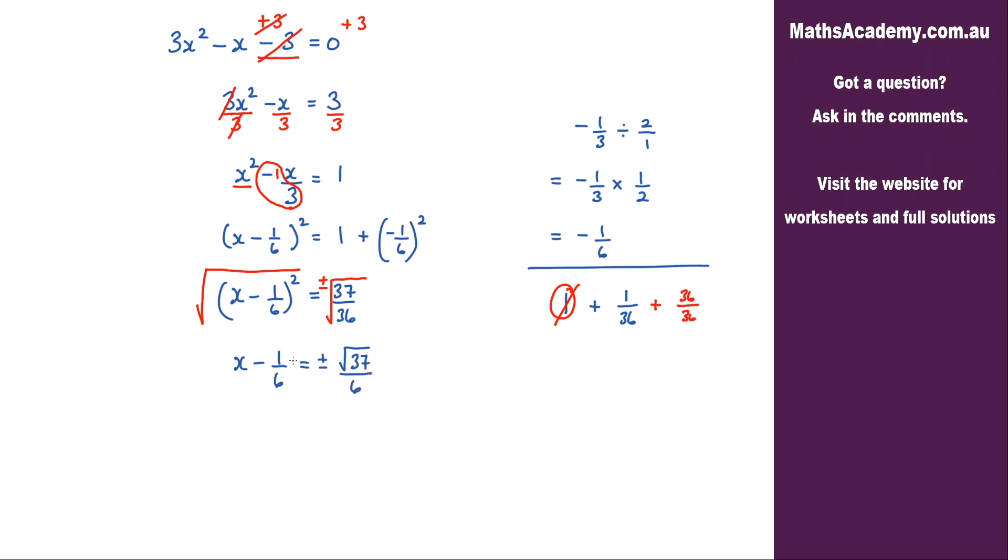Now the next step is to eliminate this negative 1 over 6, and I do that by adding 1 over 6. And I need to do that to both sides. Now this 1 over 6 and 1 over 6 they'll cancel. So I'm left with x equals 1 over 6 plus or minus the square root of 37 over 6.